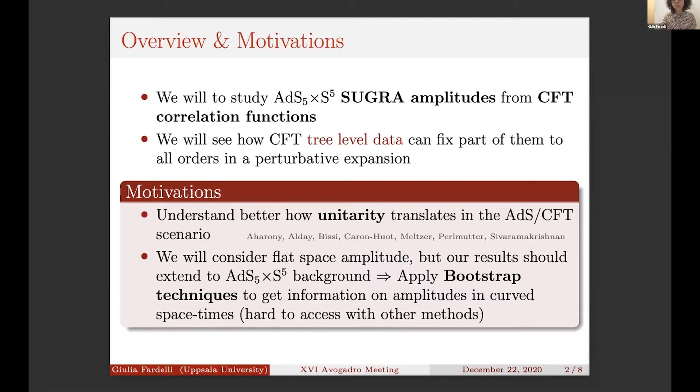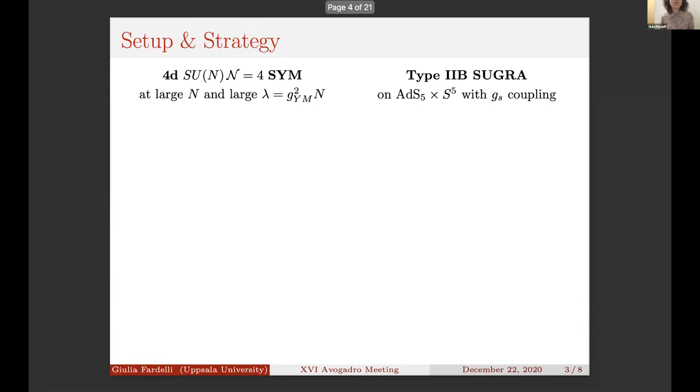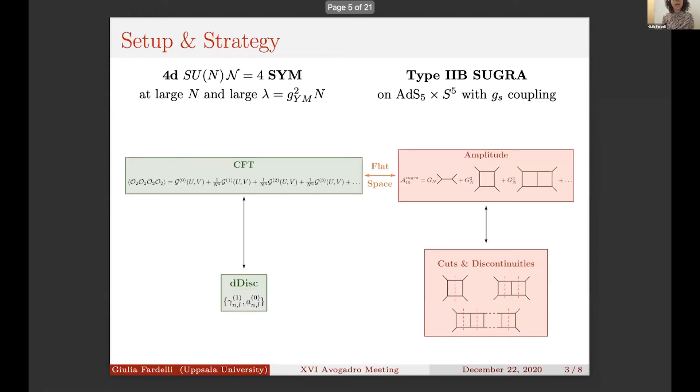The setup is the AdS/CFT correspondence, and we are considering the SU(N) N=4 super Yang-Mills at large color number N and large 't Hooft coupling λ. This is well known to be dual to Type IIB super gravity on AdS5×S5.